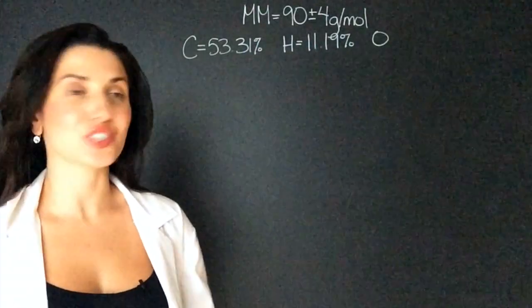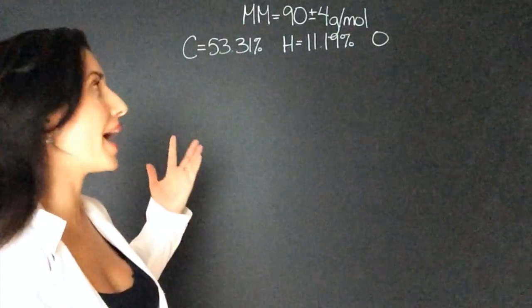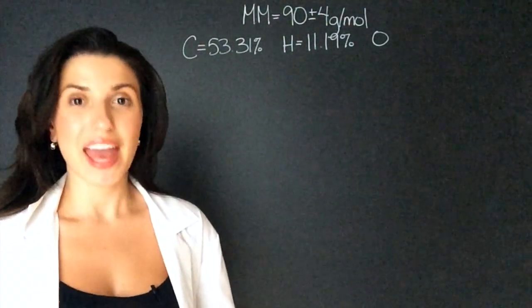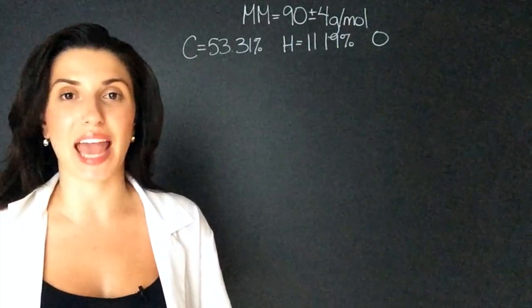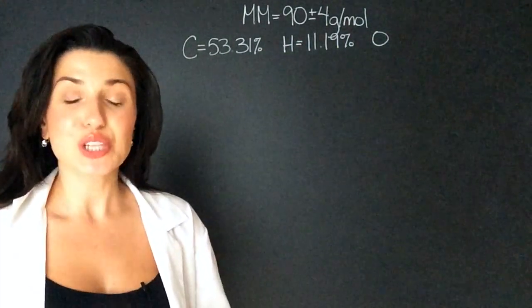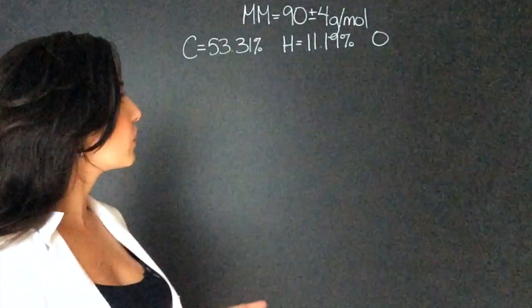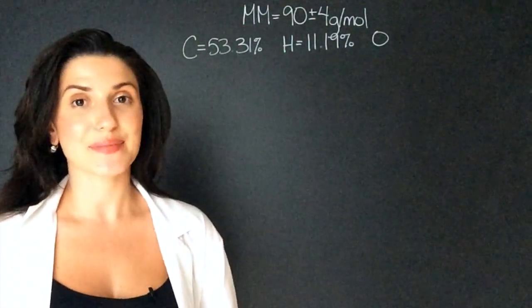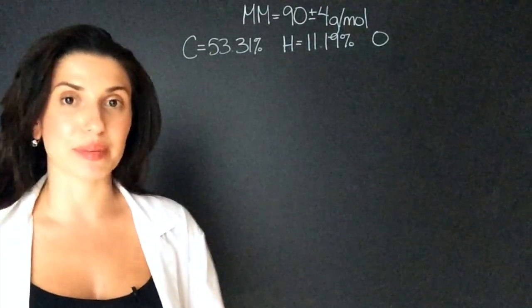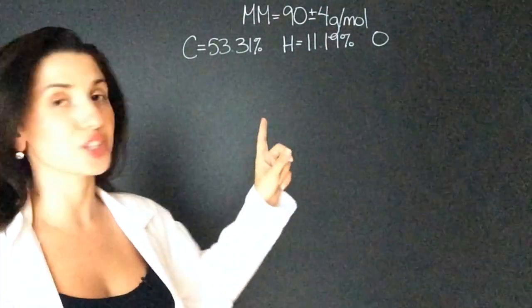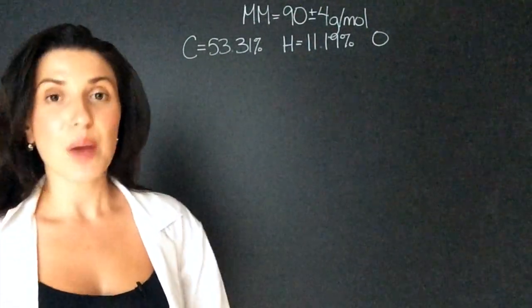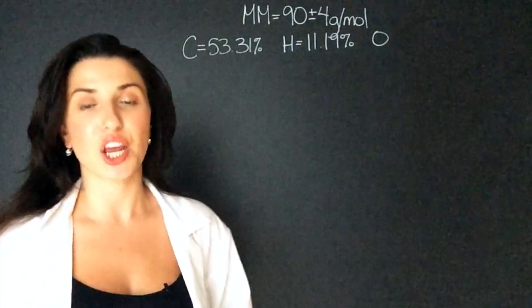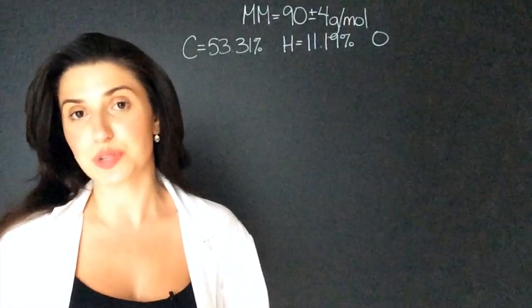Our next question tells us that we have a molar mass of 90 plus or minus four grams per mole. That plus or minus is just accounting for experimental error. So if we find a molar mass anywhere between 86 and 94, we know we're correct. Now, it tells us that our mixture has carbon, hydrogen, and oxygen in it, but it only gives us the mass percent for carbon and hydrogen. So we have to find the mass percent of oxygen.